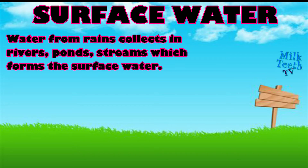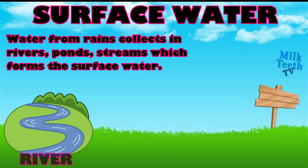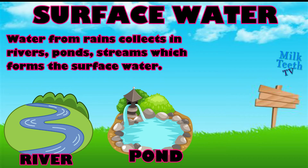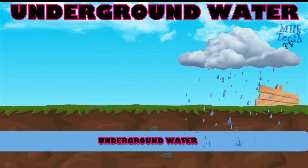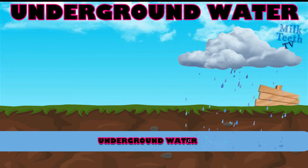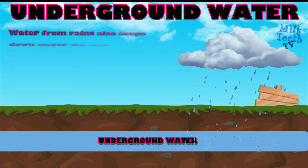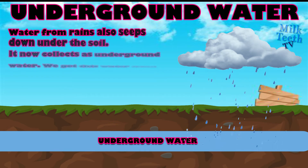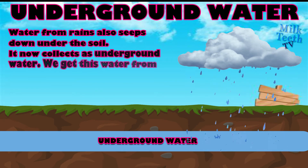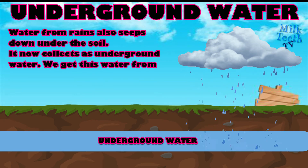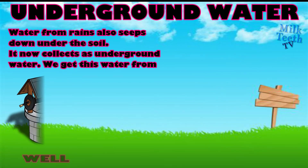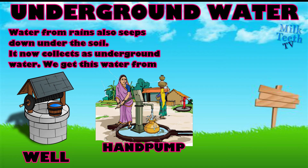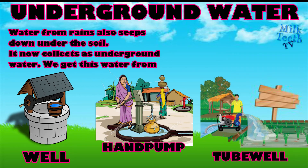So, the main sources of surface water are river, pond, and lake. The third source of water is underground water. Water from rains also seeps down under the soil and collects as underground water. We get this water from wells, hand pumps, and tube wells.